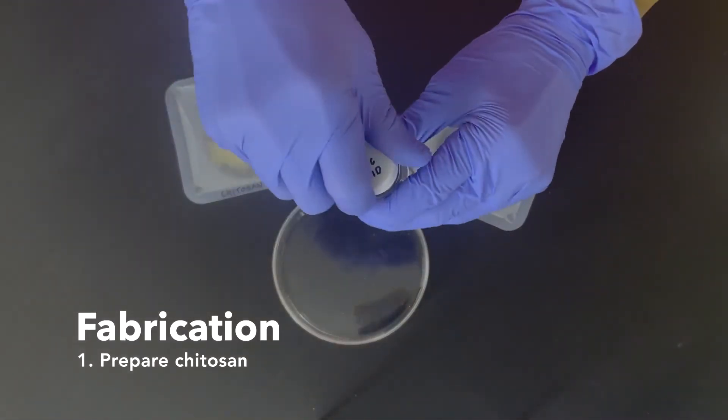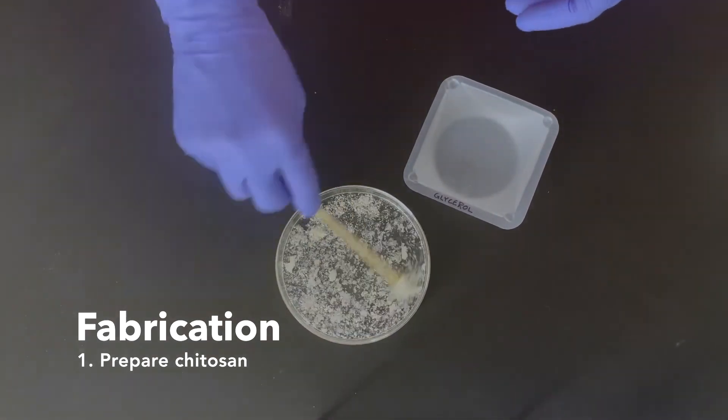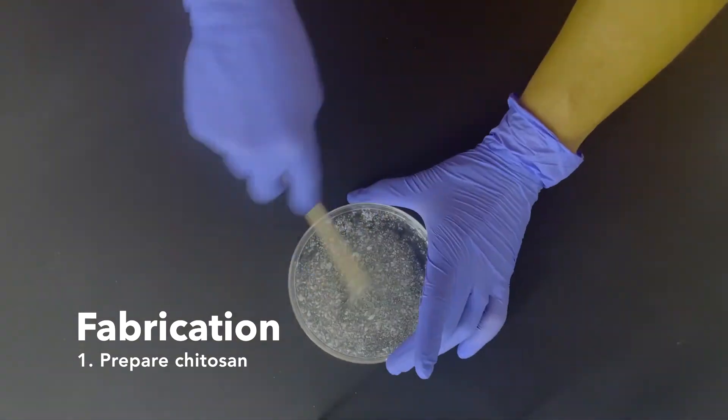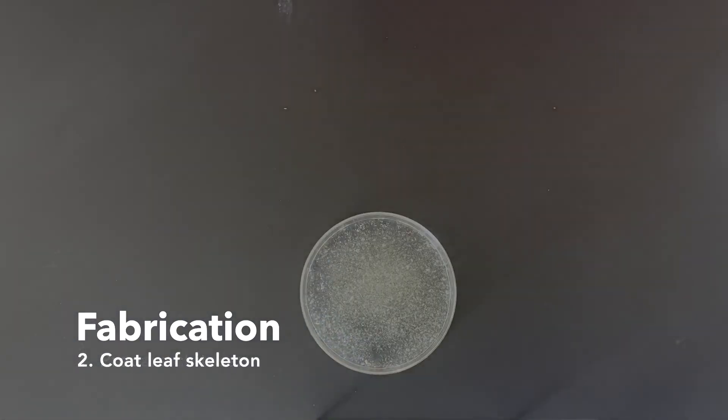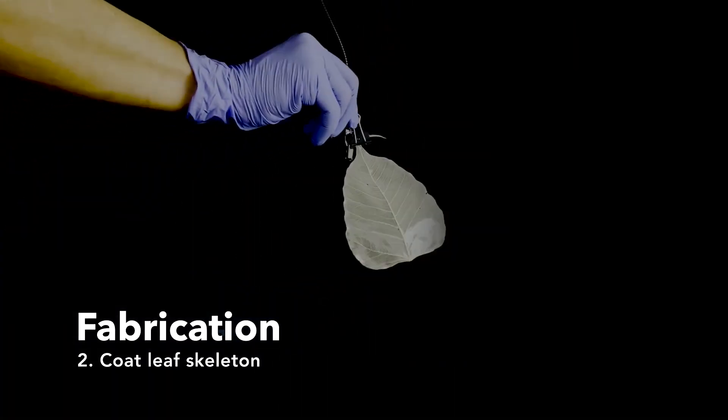First, we prepare a chitosan gel by mixing chitosan powder with a dilute acetic acid solution. After initial mixing, we add glycerol as a plasticizer and mix again. We then take a leaf skeleton, which we purchased online, dip it in the chitosan, and hang it to dry.